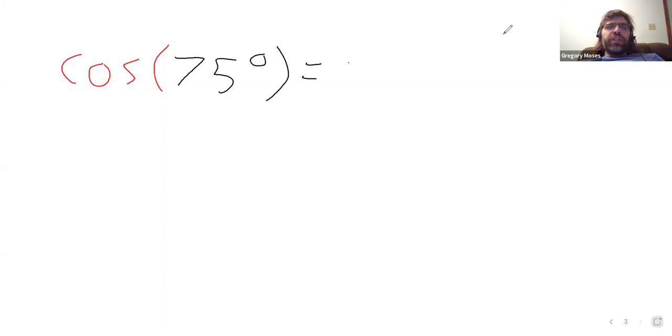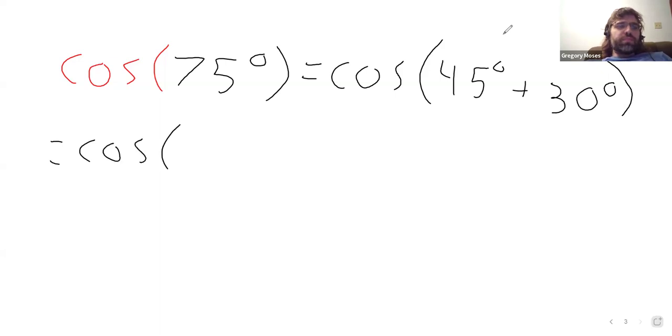But it's the sum of two values whose cosines and sines we know. So if we write 75 degrees as 45 degrees plus 30 degrees, we can hit this with our identity.